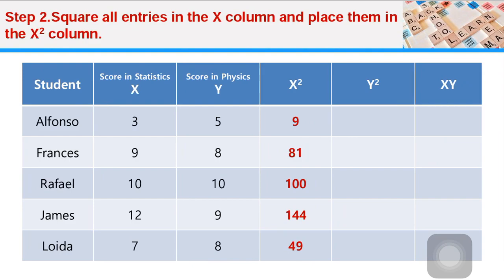12 squared is 144, 7 squared is 49. Step two is done.